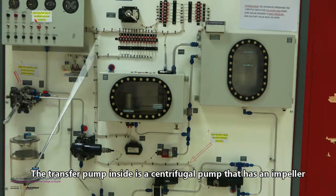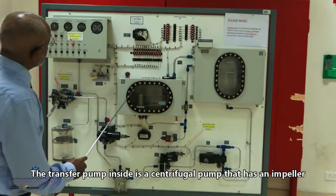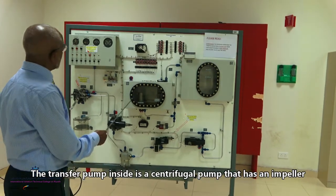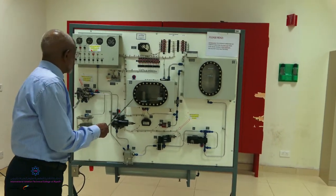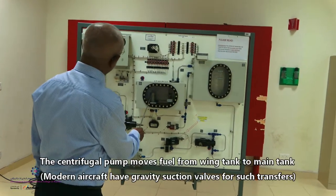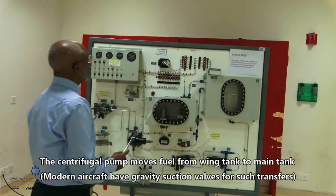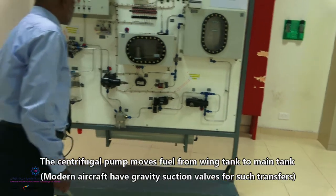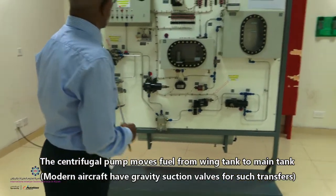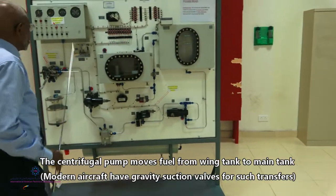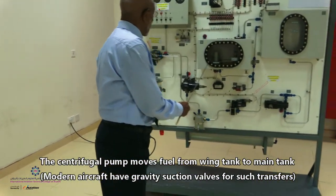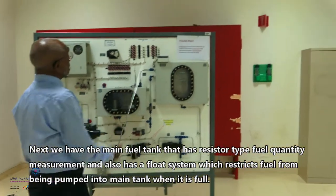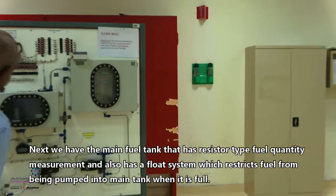But the transfer pump, it is a centrifugal pump which has an impeller. This centrifugal pump moves the fuel from the wing tank to the main tank and then also separates the vapor by the function of the centrifugal impeller. Next, here we got the main fuel tank.